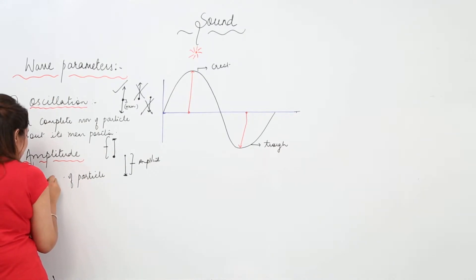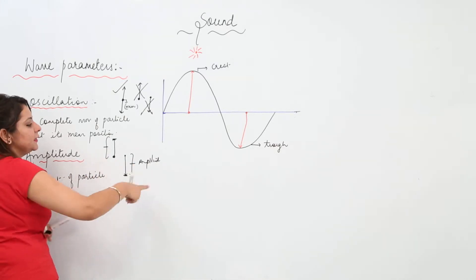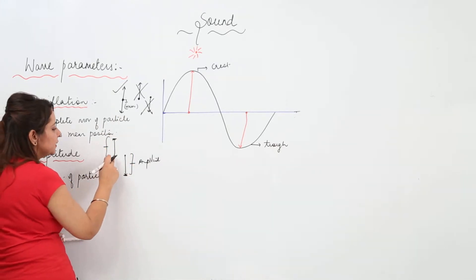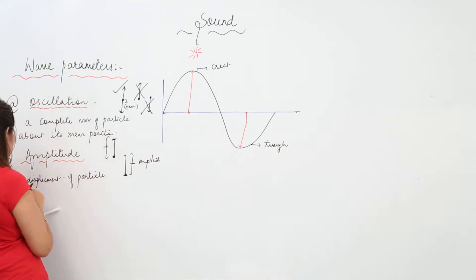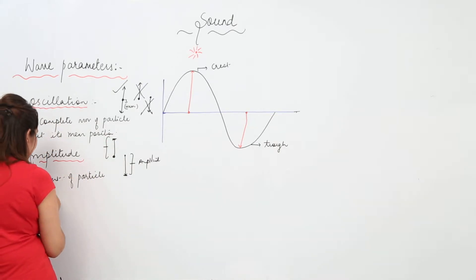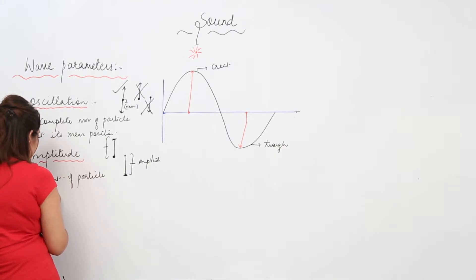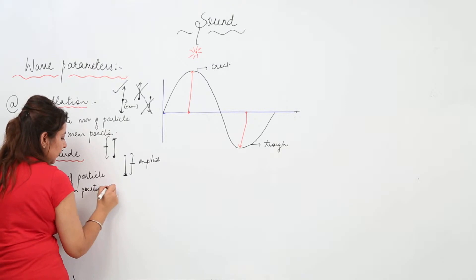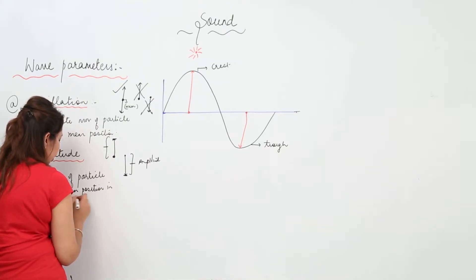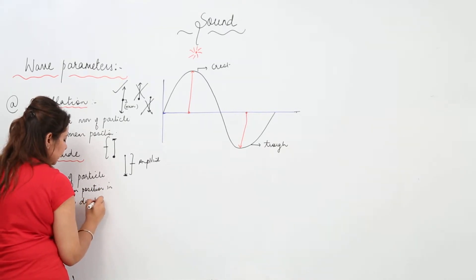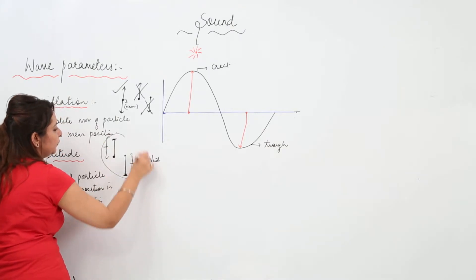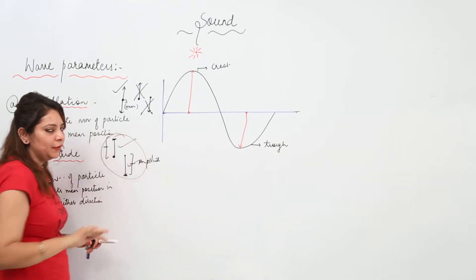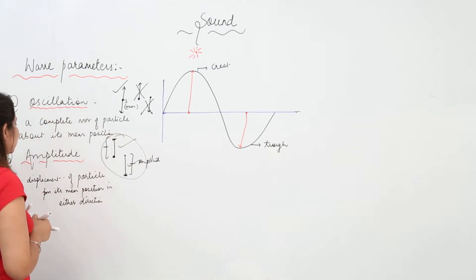Why do we use the term displacement? Because displacement is a distance in a specific direction. So this is the distance travelled in a specific direction, therefore we say maximum displacement of particle from its mean position in either direction — whether upward or downward. You do not have to take both; we just need one distance, either up or down. So that is what amplitude is.